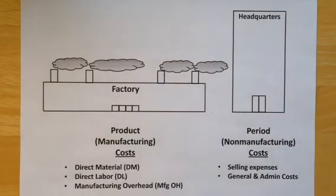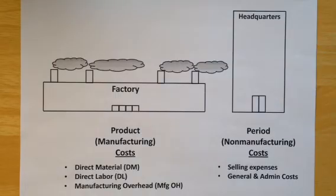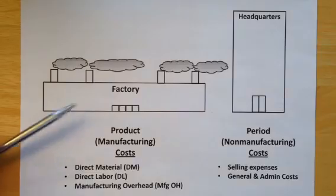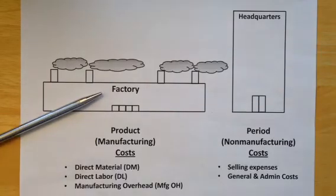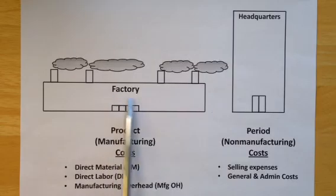I hope that helps you understand how to separate product costs versus period costs — selling expenses and general and administrative expenses. When identifying product costs, you won't always see the term 'factory.' A problem may instead discuss a production facility, manufacturing facility, or assembly plant. All of those are terms for a facility where we are making things — and like the factory, those are product costs.